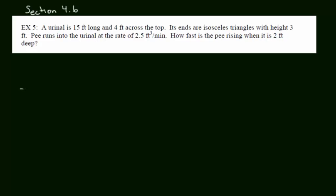How fast is the pee rising when it is 2 feet deep? Pretty gross. Anyway, here is the troughed urinal. It has an isosceles triangle at the end, and then it goes out like this. See the trough?